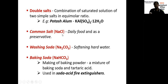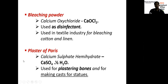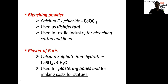Common salt (NaCl) can be used as a preservative in daily food. Washing soda is used for softening of hard water. Baking soda is used in the baking industry and contains a mixture of soda and tartaric acid; it is also used in soda-acid fire extinguishers. Bleaching powder — calcium oxychloride, CaOCl2 — is very important for examinations. It is used as a disinfectant and in the textile industry for bleaching of cotton and linen. Plaster of Paris has the formula CaSO4·½H2O; its name is calcium sulfate hemihydrate. It is used for plastering bones and making casts.